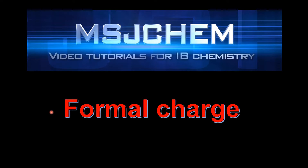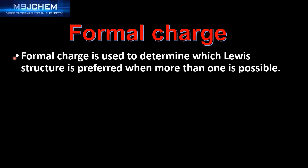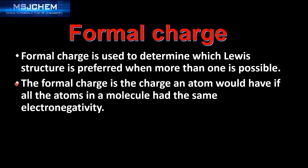This is MSJChem and in this video I'm going to look at formal charge. Formal charge is used to determine which Lewis structure is preferred when more than one is possible. The formal charge is the charge an atom would have if all the atoms in a molecule had the same electronegativity.